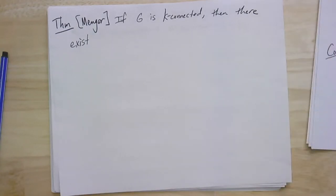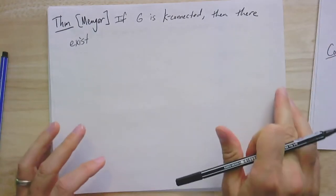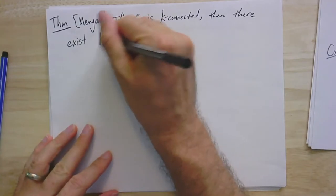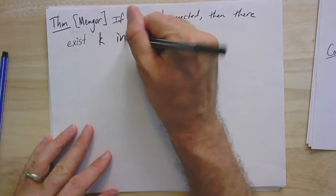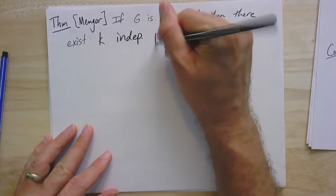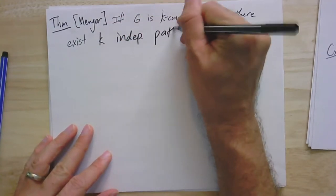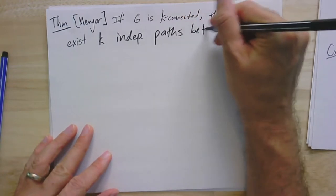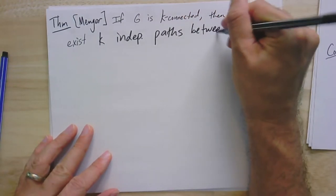So let's write the statement. If G is k-connected, then there exist k independent paths between every pair of vertices.